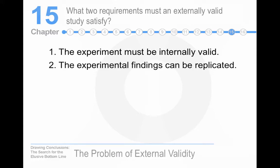What are the true requirements that an externally valid study has to satisfy? Well, it's got to be internally valid, and the experimental findings can be replicated. I would add a third point: you have to study something that occurs in the real world. For example, most people don't use mnemonics in their daily life, especially people who aren't studying for a test. So studying mnemonics in the lab has had very low external validity literally for centuries since paper became more readily available.